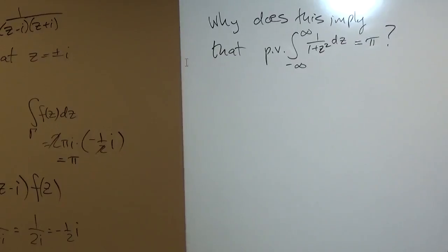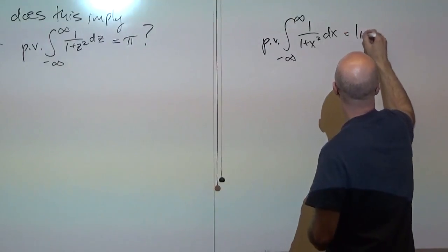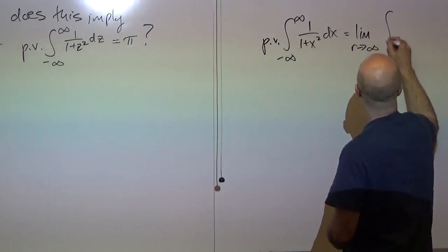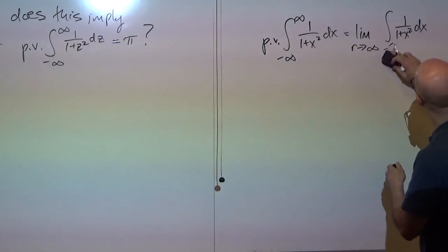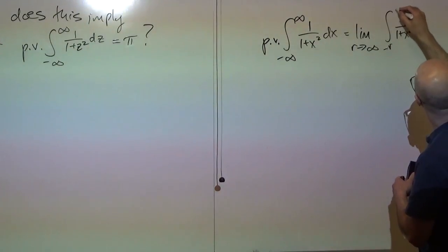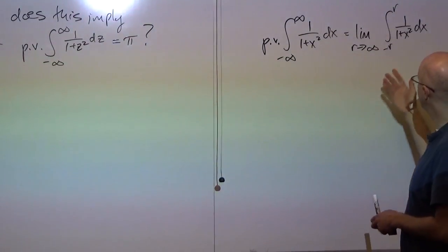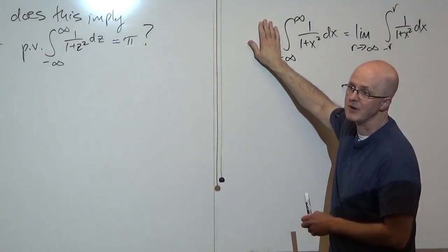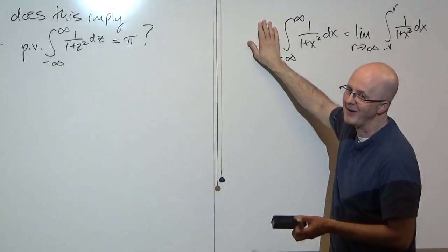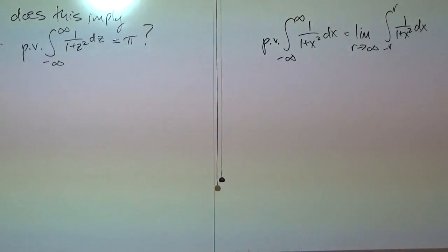The principal value of an improper integral is defined to be a different kind of limit — you let both limits go off to their respective infinities at the same time. If the ordinary improper integral converges — and it does, as you can show via the comparison test or by calculating it directly — then the principal value of the improper integral also converges to the same thing.